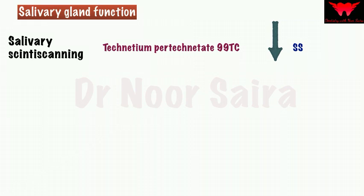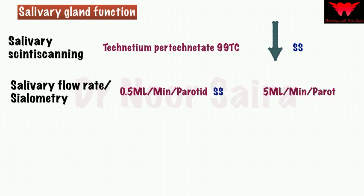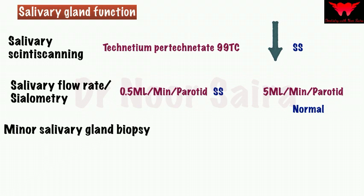Another important test is salivary flow rate measurement, or sialometry. In Sjögren's syndrome, it is reduced to 0.5 ml per minute in each parotid gland, compared to 5 ml per minute per parotid gland in a normal individual. The third test is a minor salivary gland biopsy. These three tests are used to determine salivary gland function and are commonly asked in entrance examinations.